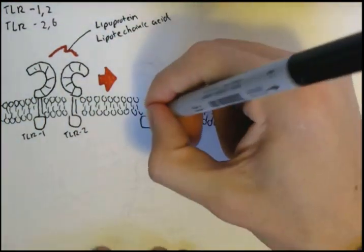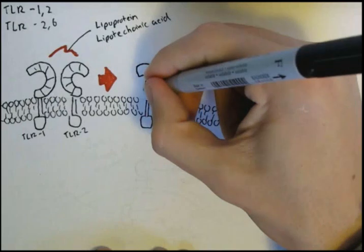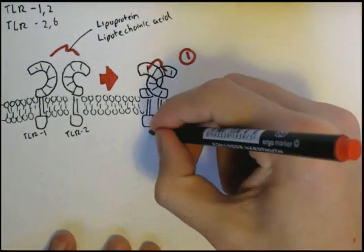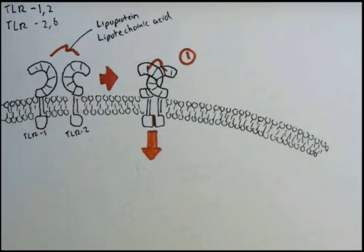PAMP's lipoprotein, or lipoteichoic acid, is in the extracellular fluid. TLRs 1 and 2 bind to these PAMP and attach together, bringing its two lower domains together. Now this is the first step.